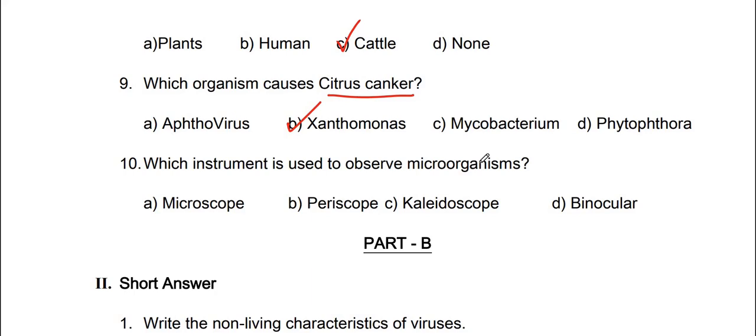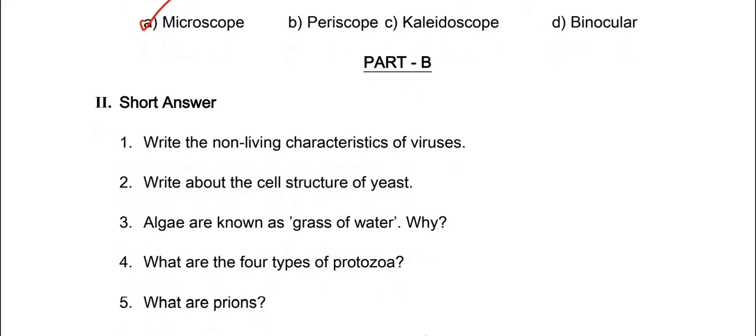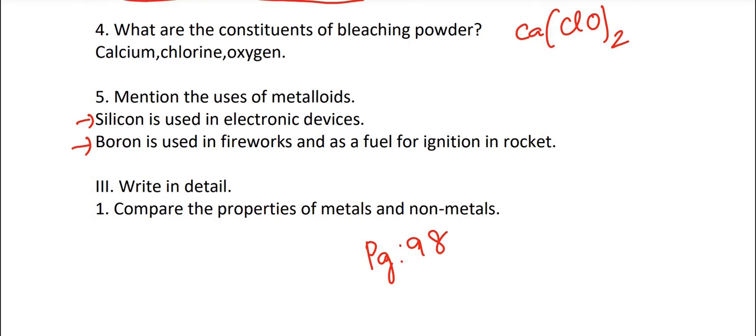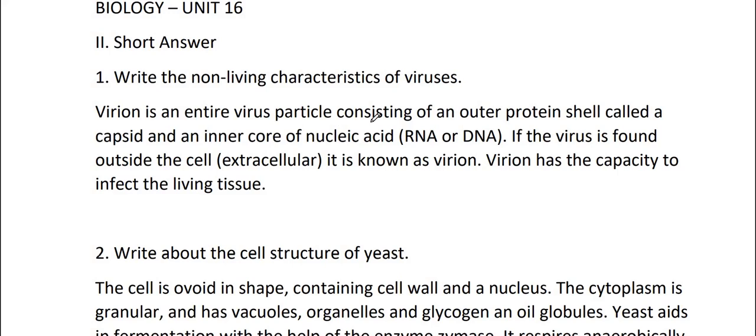Tenth one, which instrument is used to observe microorganism? Microscope. Okay, then part B paakklaun, short answers. Write the non-living characteristics of viruses. Virion is an entire virus particle consisting of an outer protein shell called a capsid and an inner core of nucleic acid that is RNA or DNA. If the virus is found outside the cell, it is known as virion. Virion has the capacity to infect the living tissue.